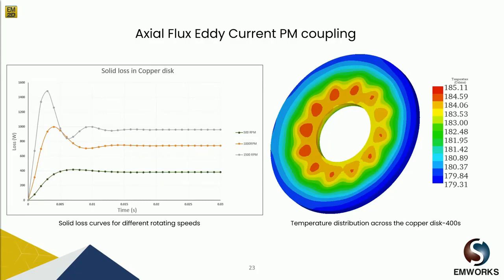This analysis shows solid loss in the copper disk versus speed variation over time. These losses are converted into heat and dissipated, so thermal coupling is used to evaluate and compute the temperature rise. The right graph shows the steady-state temperature of the conductive disc after 400 seconds. A transient analysis was used here, but a direct steady-state thermal analysis is also available to obtain this temperature without running through transient analysis.